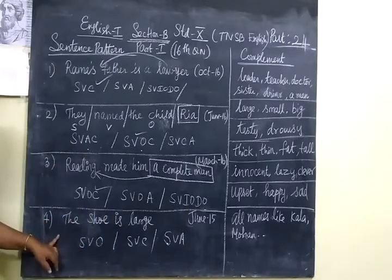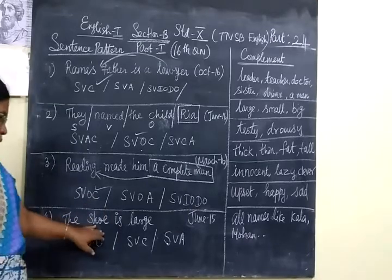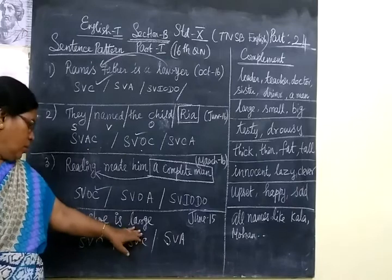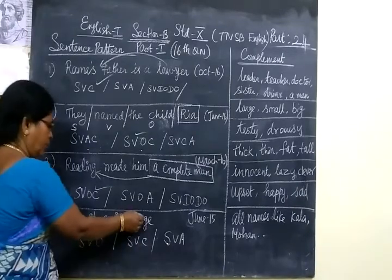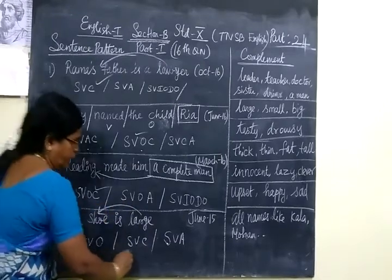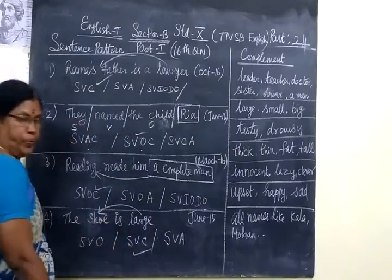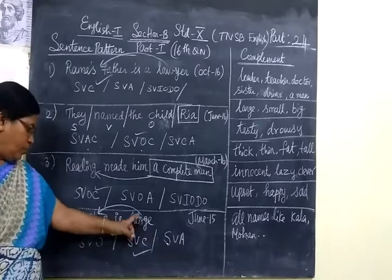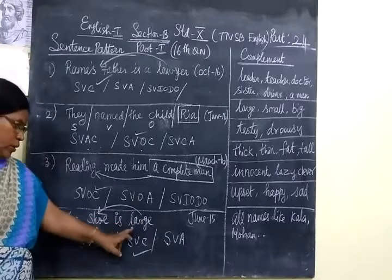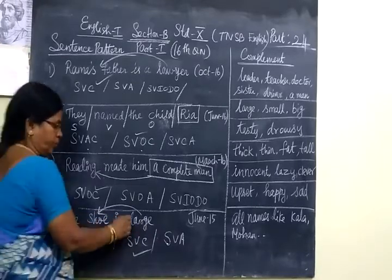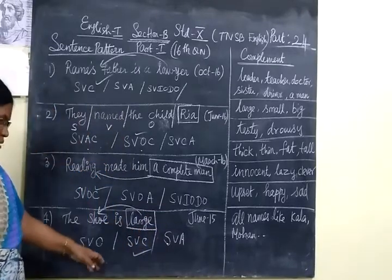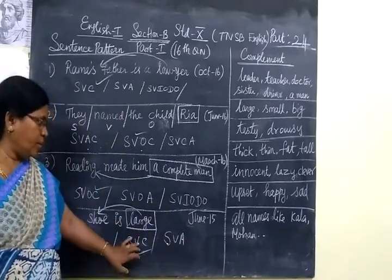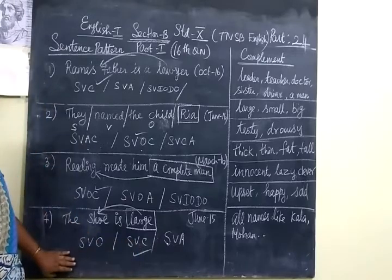Now come to the last one. The shoe is large. How is the shoe? The shoe is large. Large - it refers to shoe. So you have to select SVC. Large refers to the shoe. It refers to the complement. Large refers to complement. So the answer for this is SVC.